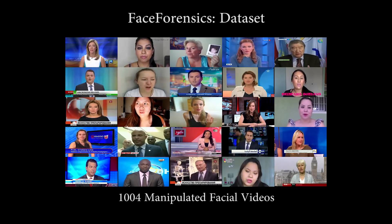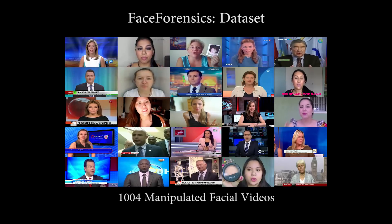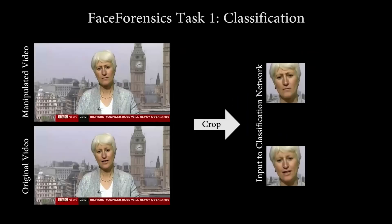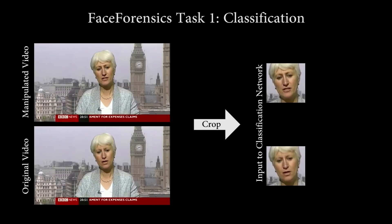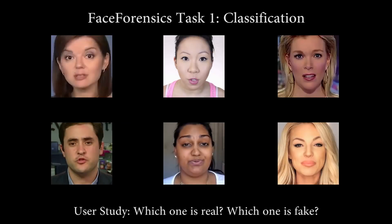We evaluate our dataset on three tasks: classification, segmentation, and refinement. For classification, we must determine whether an image contains face edits. We consider the region around the face as input. Here, you can see sample inputs of our network. Which ones are real and which ones are fake?